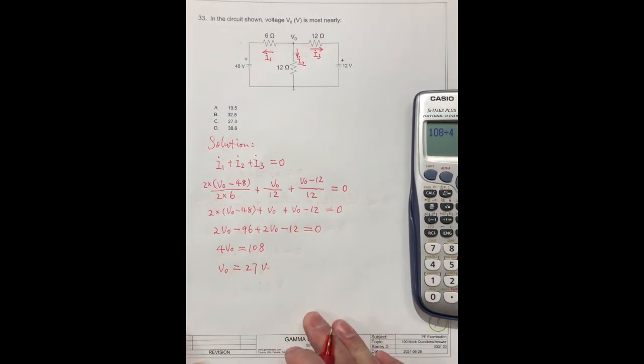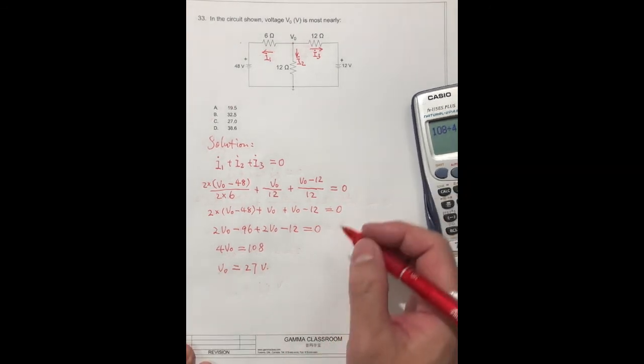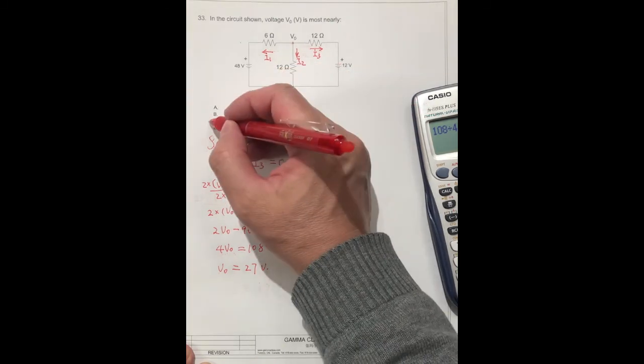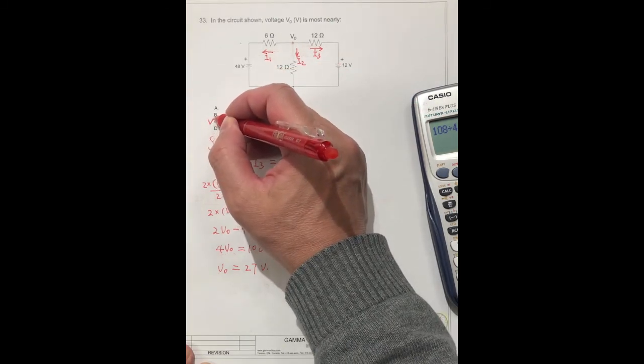What is it? So the correct answer is C, 27 volts. The correct answer should be C.